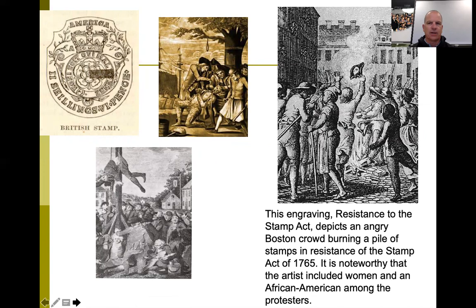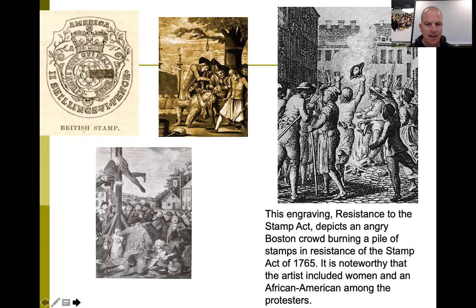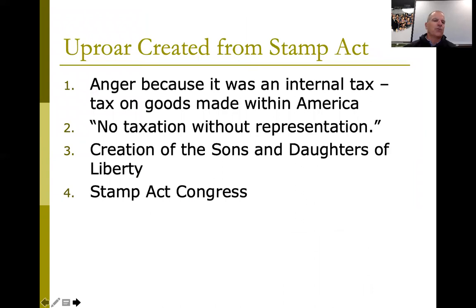The hysteria caused by the Stamp Act was intense. Colonists would tar and feather the tax collectors — pouring really hot tar on them, dumping feathers over them, dragging them through Boston on a rope to humiliate them. They would force tea down their throats and hang them by their pants. There was also a lot of resistance and, importantly, a sense of unity — colonists felt they were doing something together to get rid of the Stamp Act.